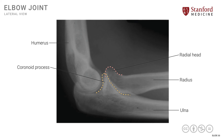We can also see another part of the proximal ulna known as the olecranon process — a large bony extension of the proximal ulna. The olecranon process extends posteriorly, going behind the condylar processes of the distal humerus. Any of these three processes — the olecranon process, the coronoid process, or the radial head — can be fractured, and in injuries around the elbow joint these fractures are commonly identified.